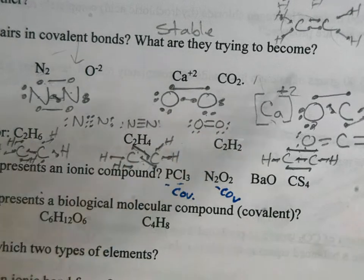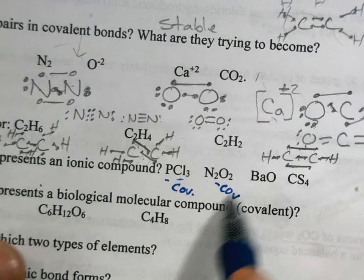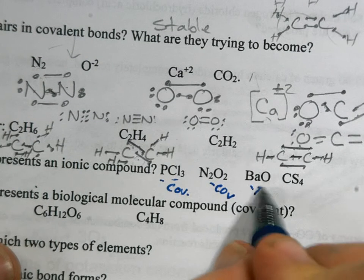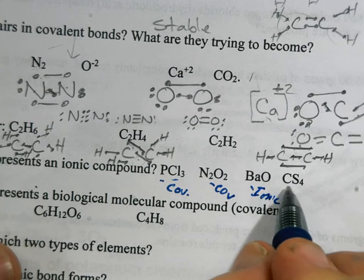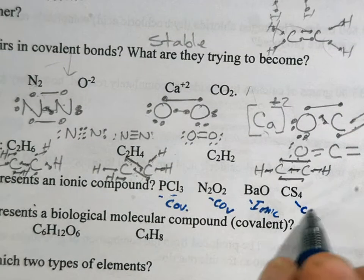Barium. Now barium is on the left side of the periodic table, way over here. So there's a metal, and oxygen is definitely a non-metal, so that will be ionic. And then we've got carbon and sulfur. Those are both non-metals, so that's going to be a covalent compound.